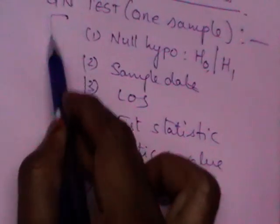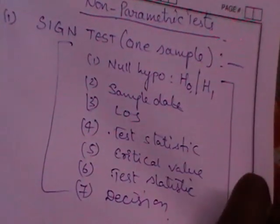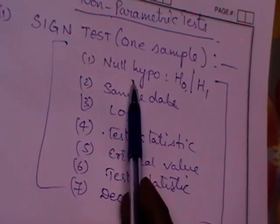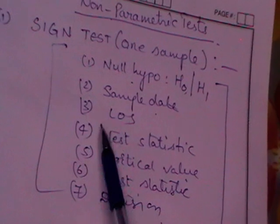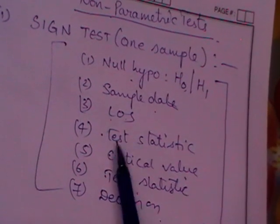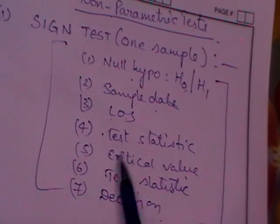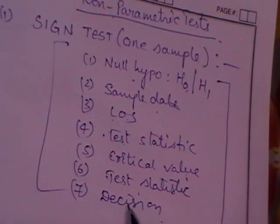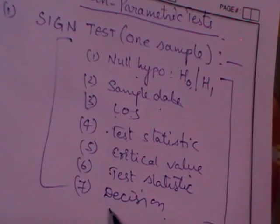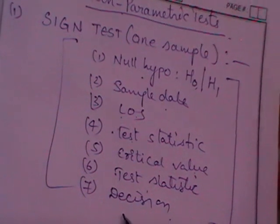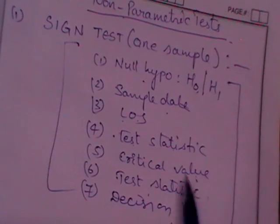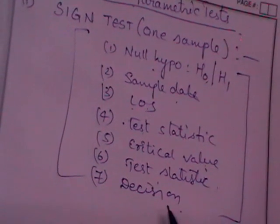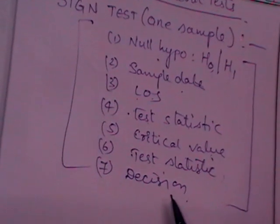These steps are common for all tests, whether parametric or non-parametric: framing a null hypothesis, collecting sample data, specifying the level of significance, writing the test statistic, finding the critical value, and making a decision. All these steps are compulsory. Now let us enter into the non-parametric test.